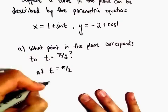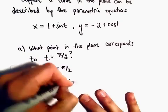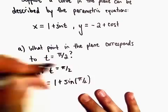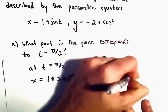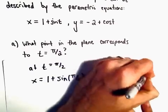we'll have x equals 1 plus sine of pi over 2. And we'll have y equals negative 2 plus cosine of pi over 2.